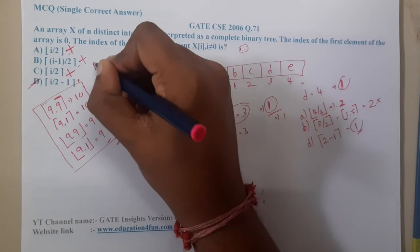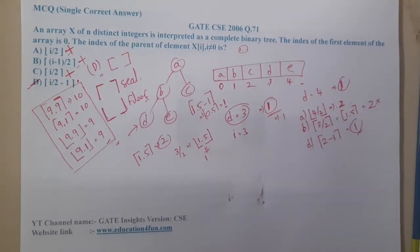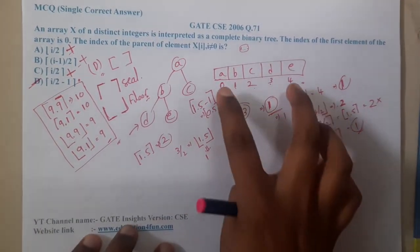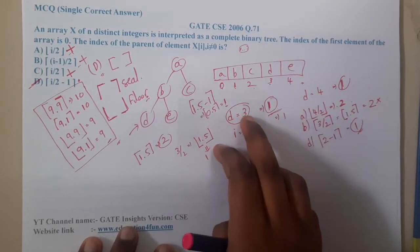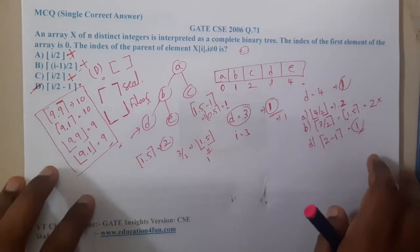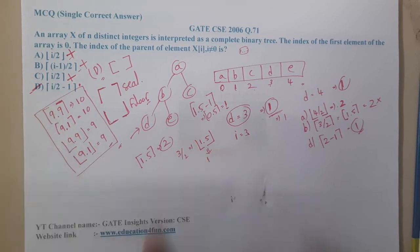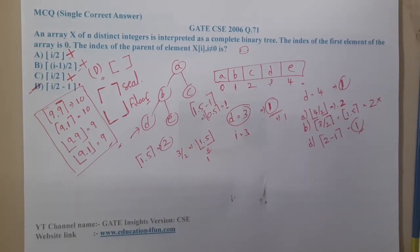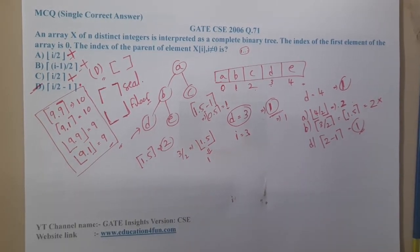So now you got an idea on how exactly to solve the question. Take an example, test the values, slowly eliminate the options, so at the end you will be left out with one option. Basically these questions will take 2 to 3 minutes maximum if you concentrate.